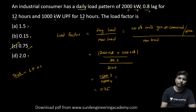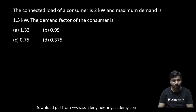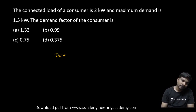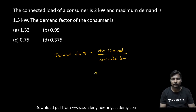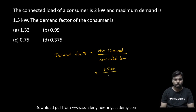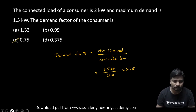Coming to the next question: the connected load of a consumer is 2 kilowatt and maximum demand is 1.5 kilowatt. What is the demand factor? Demand factor equals maximum demand divided by connected load. So 1.5 divided by 2 = 0.75. Demand factor is also less than one. The answer is option C: 0.75.